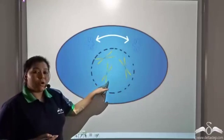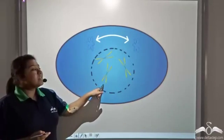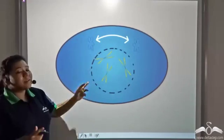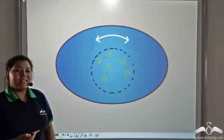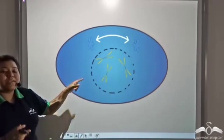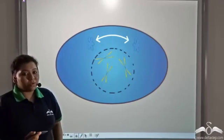The nucleolus disappears, the nuclear membrane starts disappearing as well, and the centrosomes start moving to the opposite poles.